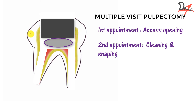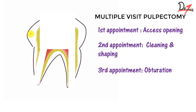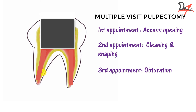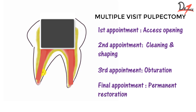At the third appointment — the obturation visit — remove the temporary restoration, irrigate, dry the canal, and start obturating. First coat the walls of the canal with a watery mix of cement, then fill the rest of the canal with a thick mix until the entire canal is filled. Give a temporary restoration, then recall after one more week, and if the patient is asymptomatic, do the final restoration and place the stainless steel crown.